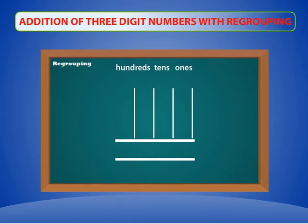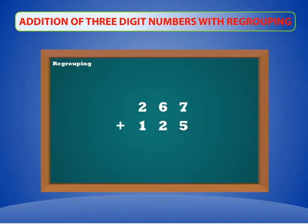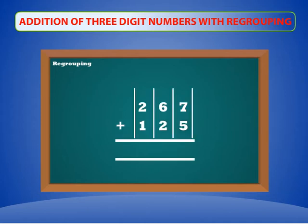Let's add 267 and 125. Arrange both the numbers in columns.